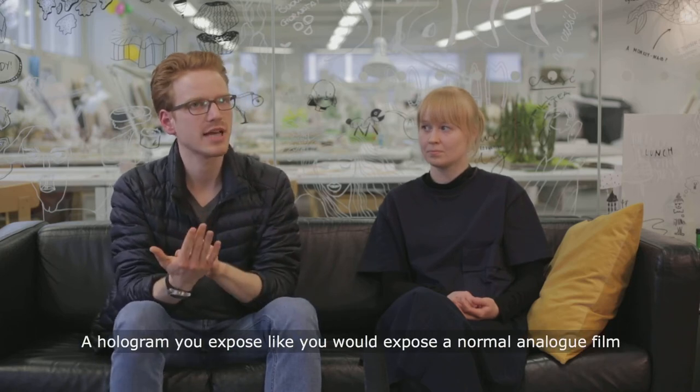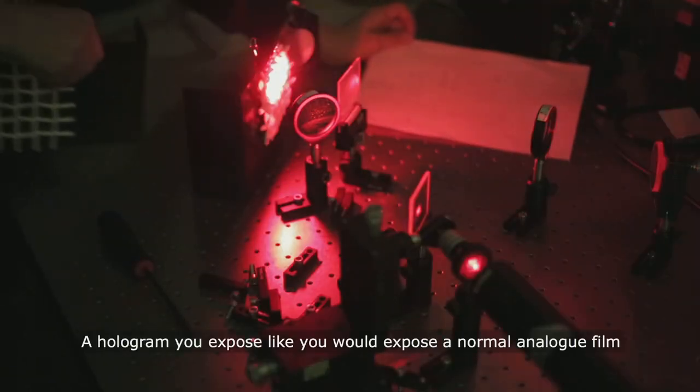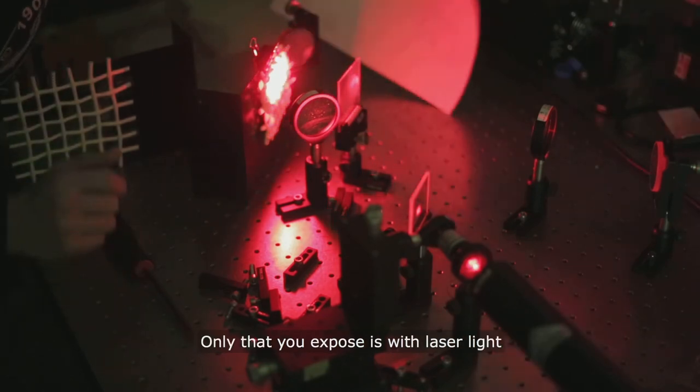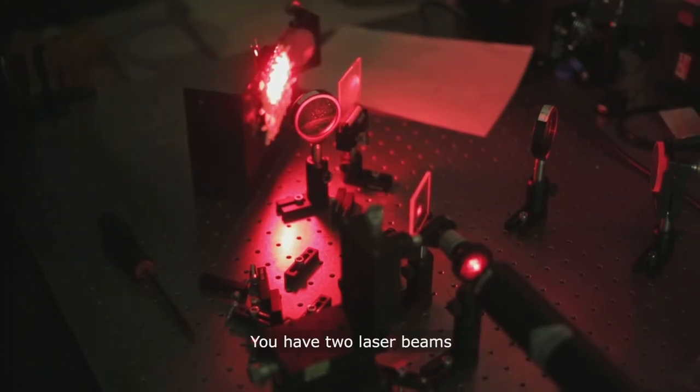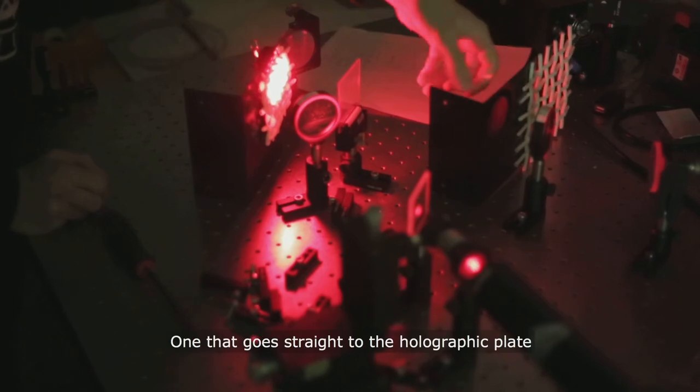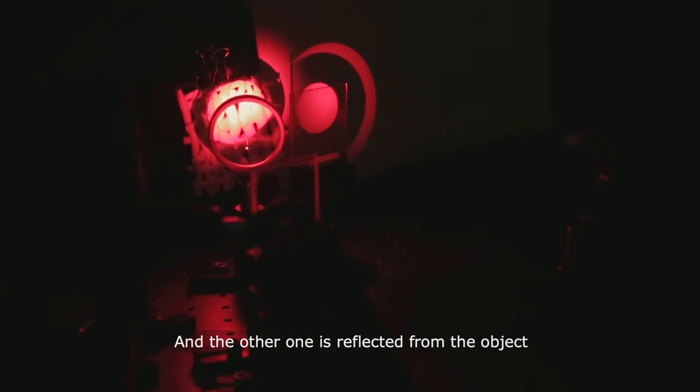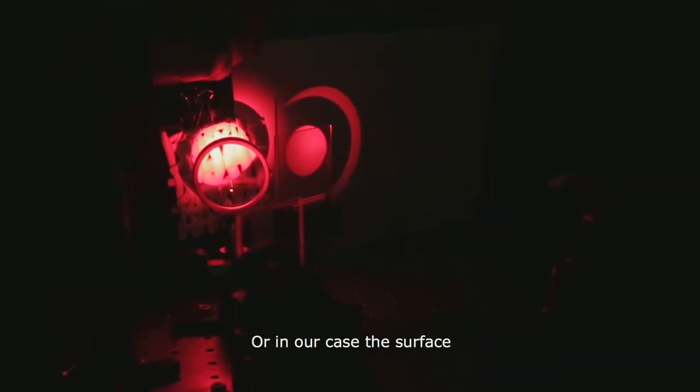So a hologram in itself you expose it a bit like you would expose a normal analog negative or analog film, only that you expose it with a laser light. So you have two laser beams. One that goes straight onto the holographic plate and the other one that's reflected from the object itself, or in our case the surface.